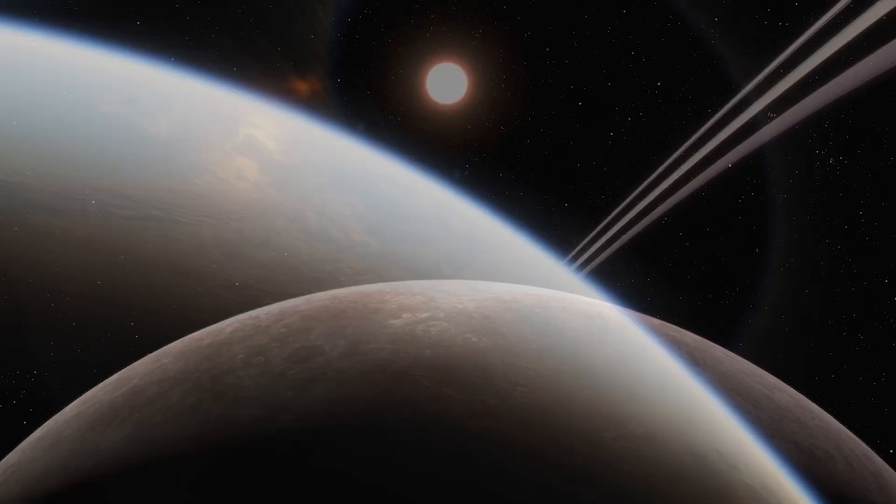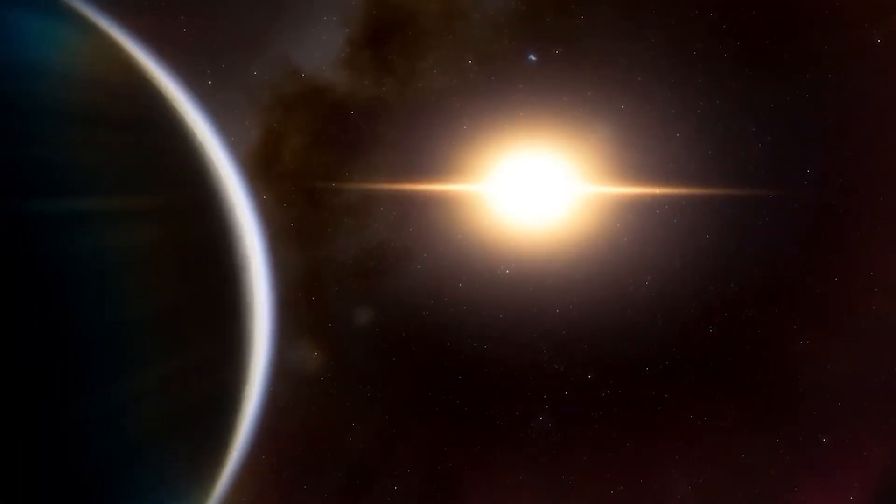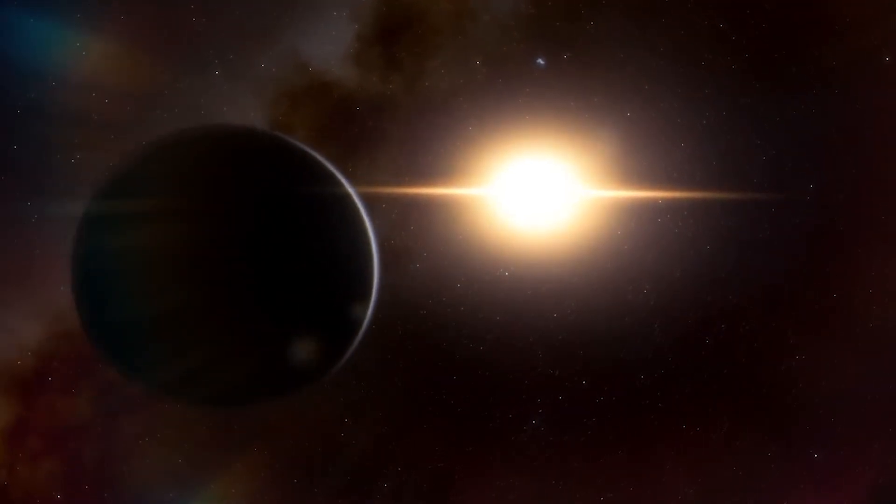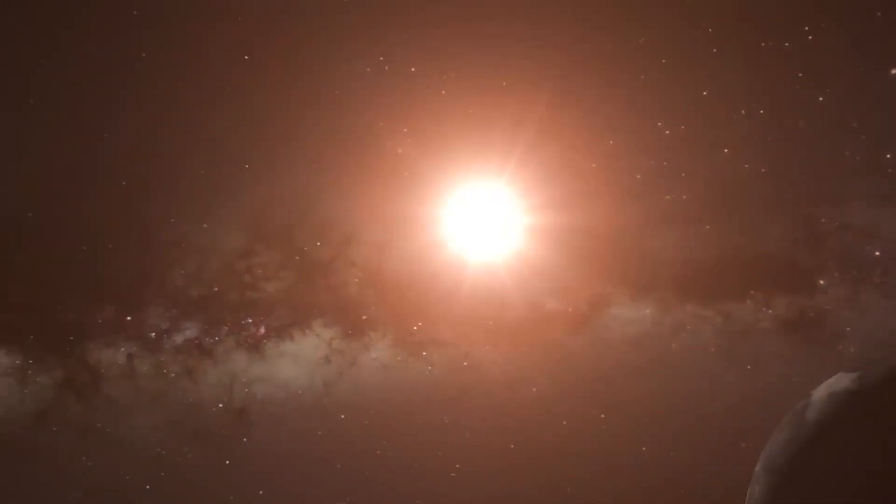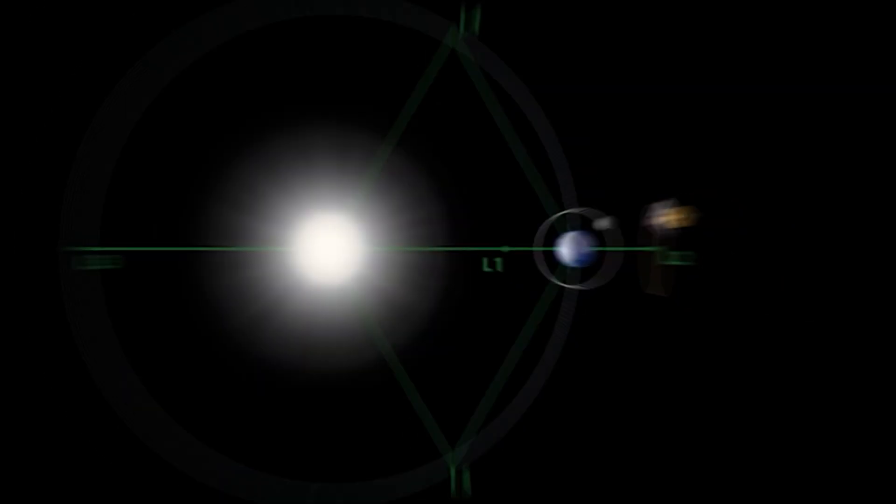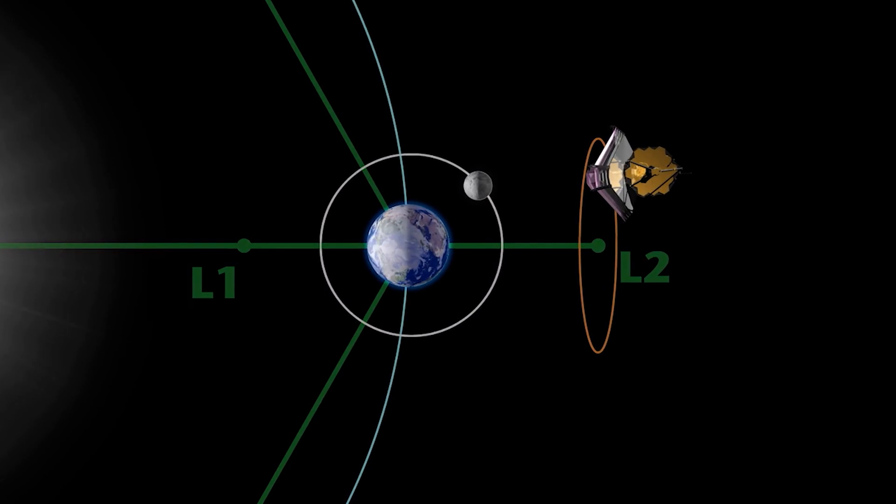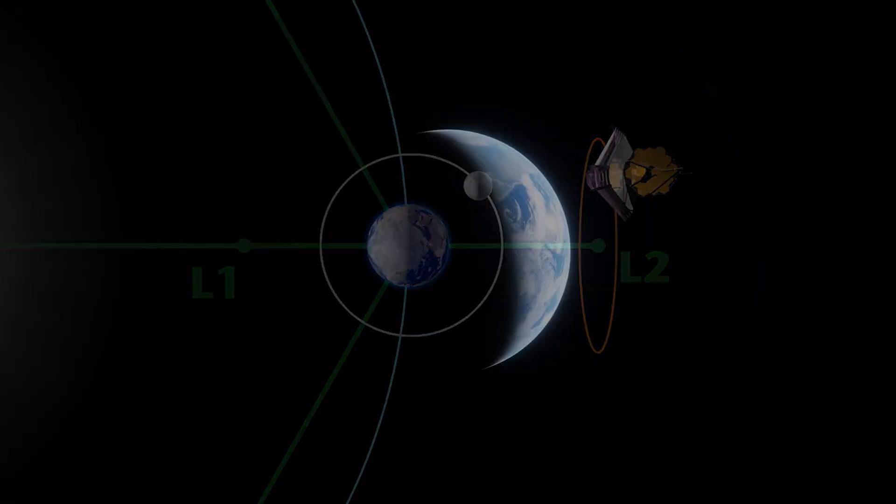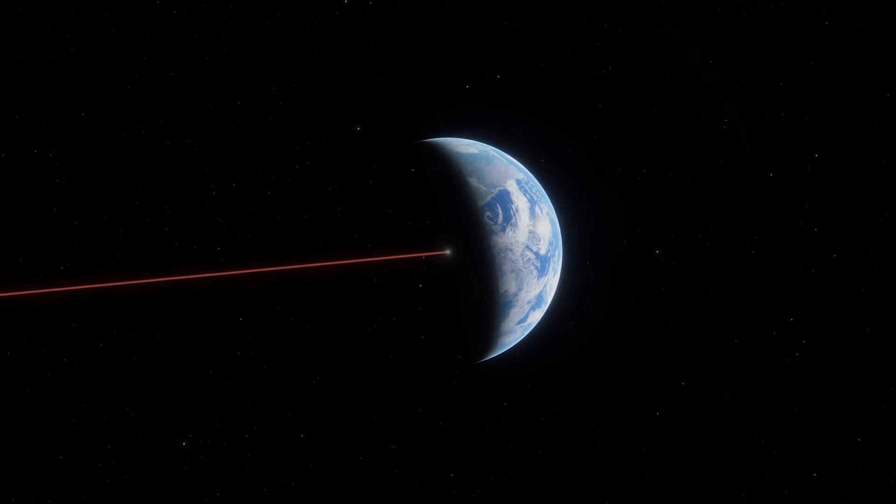The temperature variation on Proxima b, as determined by its atmospheric composition, is an intriguing topic for astronomers, and the JWST can effectively probe the planet's thermal emissions to provide crucial data on its atmospheric properties. In addition, JWST's orbit around the Earth aligns with the orbit of Proxima b, allowing full observations of its diurnal and nocturnal cycles in 11.2 Earth days.